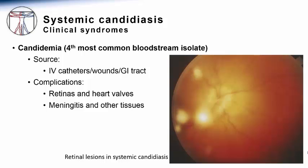One of the most common and serious forms of systemic candidiasis is candidemia, or a bloodstream infection due to candida species. When this condition is recognized, the first thing you should consider is the source of the infection, examining the patient from head to toe for predisposing factors such as IV catheters, wounds, or alterations of the GI tract.